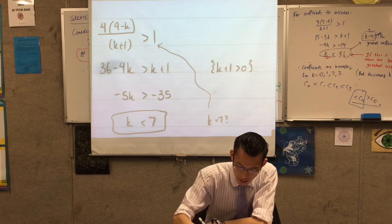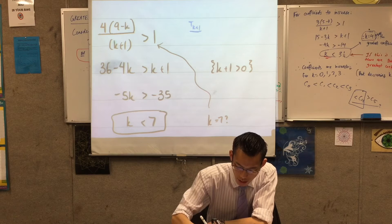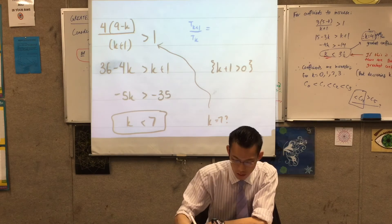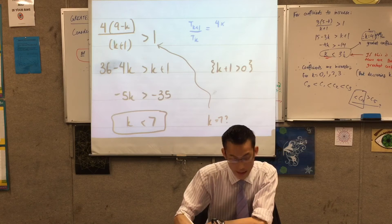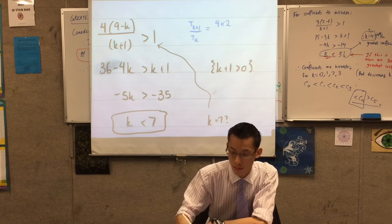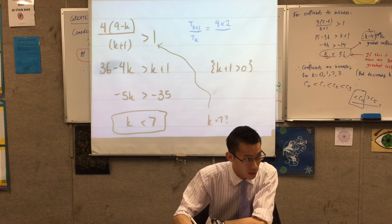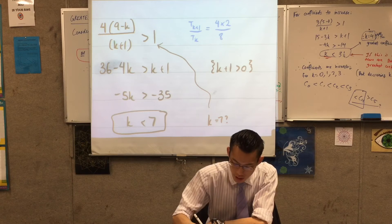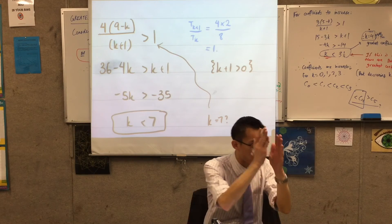This is t sub k plus one on t sub k is going to be equal to four times nine take away seven which of course is two, on seven plus one which is eight. So this ratio is one, it lands right on.